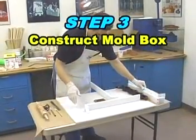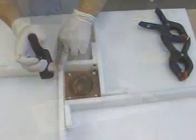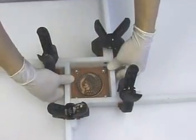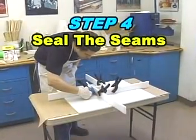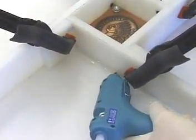The mold box side walls are positioned and secured around the clay foundation using clamps. A glue gun is then used to seal the seams at the interface between the mold box side walls and the baseboard.